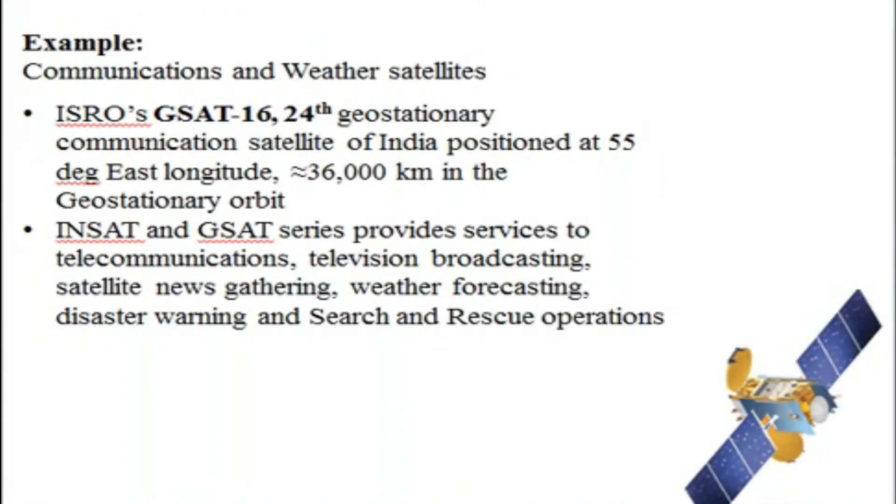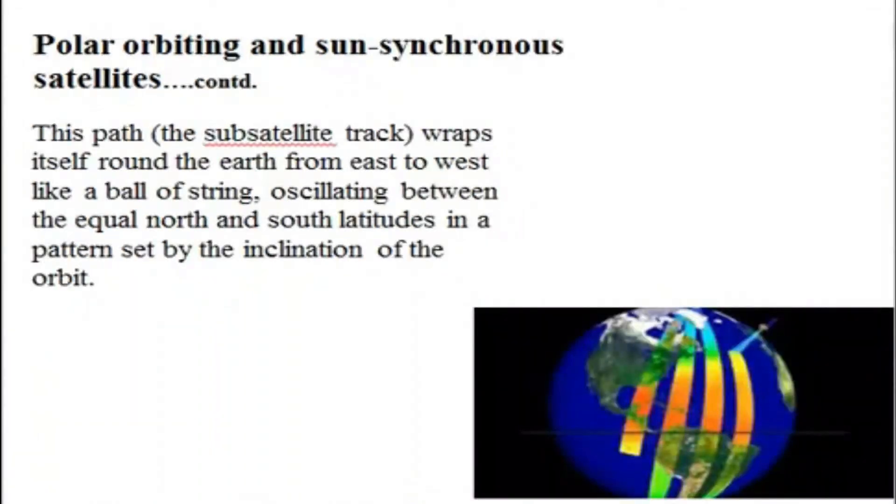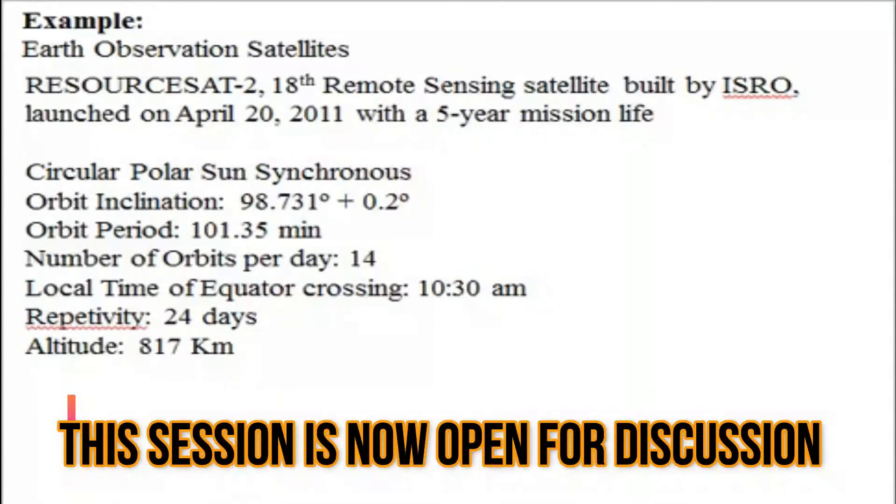Geostationary orbits are at 36,000 kilometers altitude. Communication and weather satellites are of this type. Polar orbiting sun-synchronous satellites move from North Pole to South Pole, taking photographs and acquiring images of the Earth's surface, tracing a synchronous path.